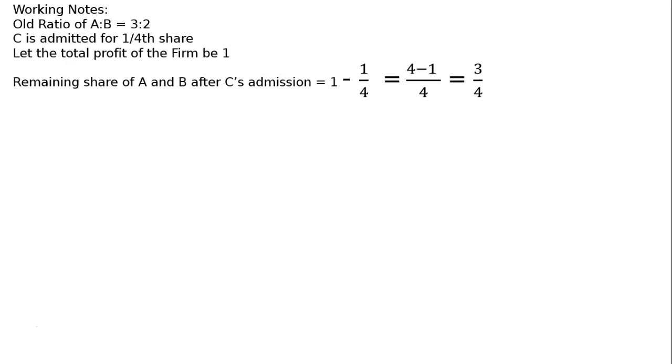Working notes. Old ratio of A to B is equal to 3 to 2. C is admitted for one-fourth share. Let the total profit of the firm be 1. Remaining share of A and B after C's admission is equal to 1 minus one-fourth, which was taken over by C.